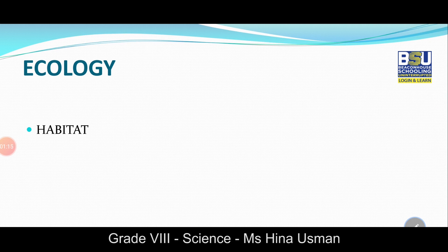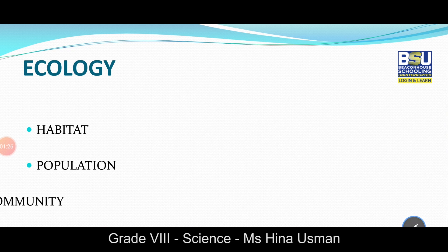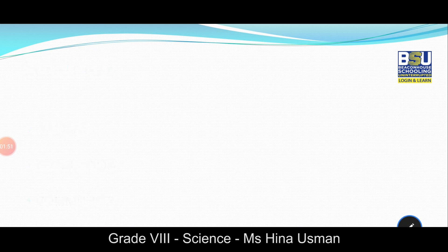Before discussing ecology in detail, I would like to explain a few terms. The first one is habitat — the natural home of an organism is called its habitat. It is the place where an organism lives and reproduces. As organisms mostly live in groups, they constitute a population — a group of organisms of the same kind living and reproducing at a given place and time.